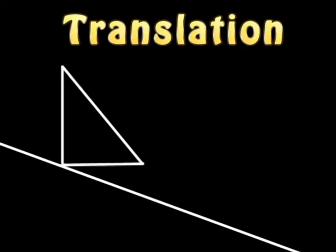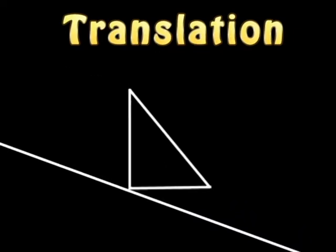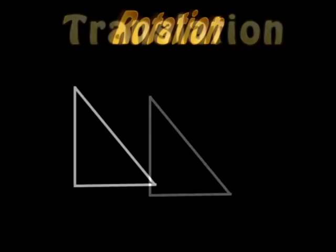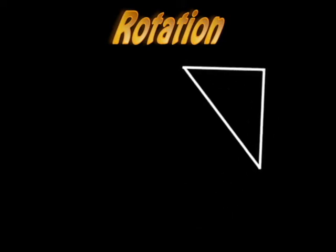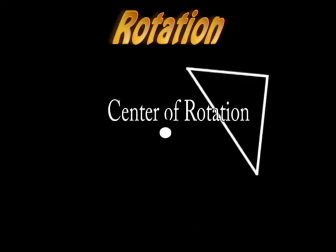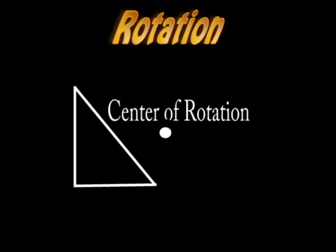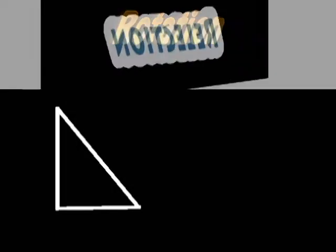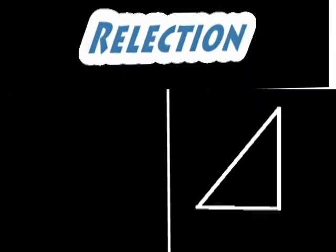Translation is sliding an image along a line. Rotation is turning an image around a point — the point is called the center of rotation. Reflection is flipping an image across a line to create a mirror image of the original image.